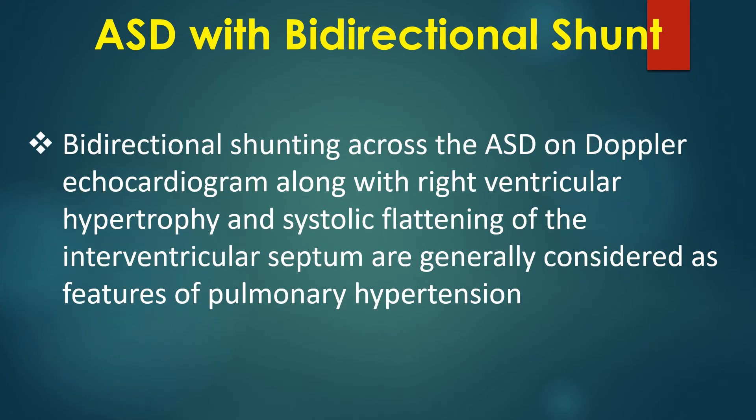Bidirectional shunting across the ASD on Doppler echocardiogram, along with right ventricular hypertrophy and systolic flattening of the interventricular septum, are generally considered features of pulmonary hypertension.